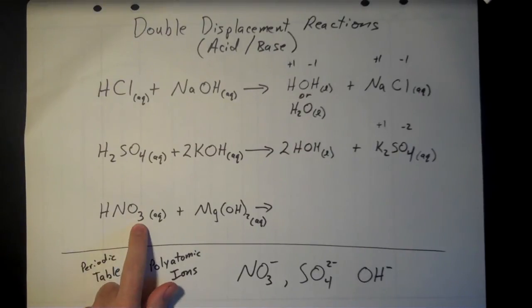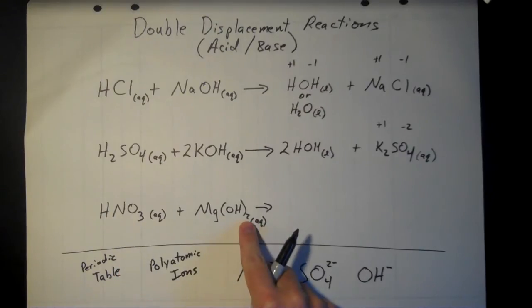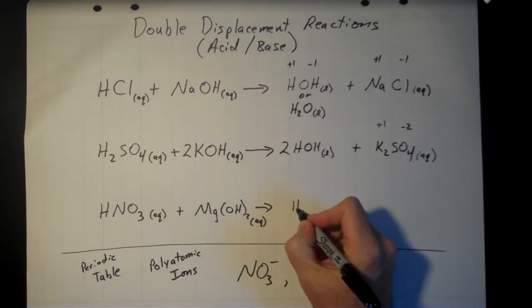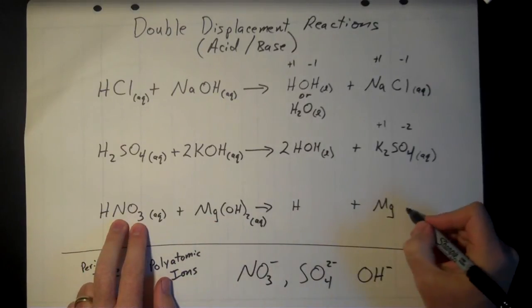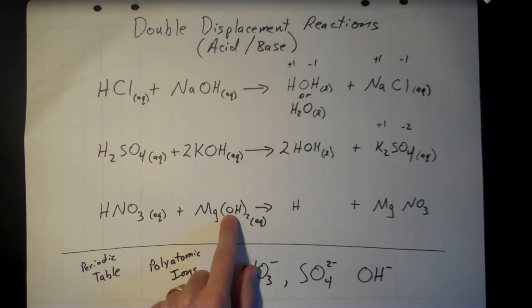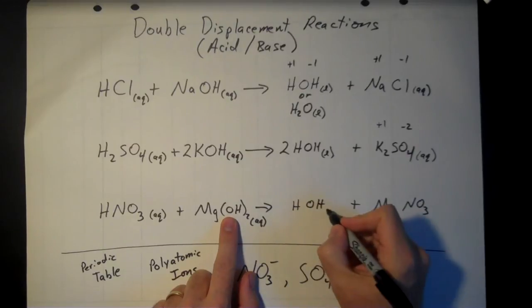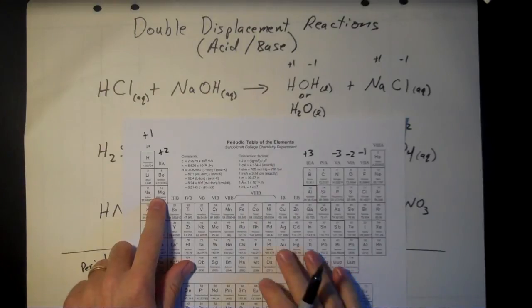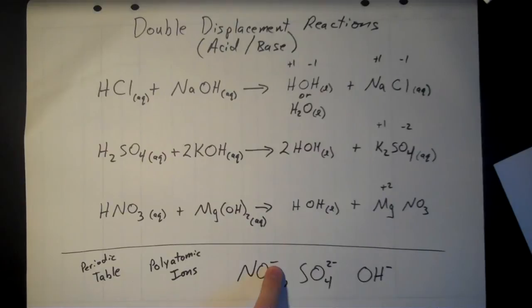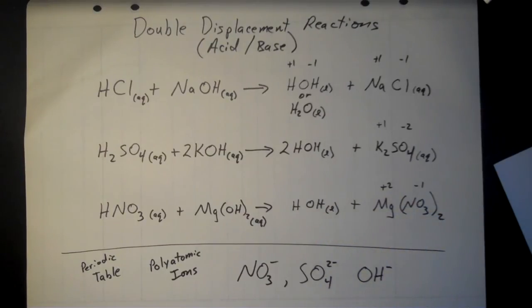For the last reaction, the only subscript we bring is the three that's part of the nitrate ion — the two outside the parentheses we leave behind. Bring one hydrogen and one magnesium over to the product side. The NO₃ stays together and goes with the magnesium; the hydroxide goes with the hydrogen to make water — H₂O. Magnesium is in column two, so it's +2, and nitrate has a -1 charge. Crisscross: one magnesium and two nitrates, giving Mg(NO₃)₂.